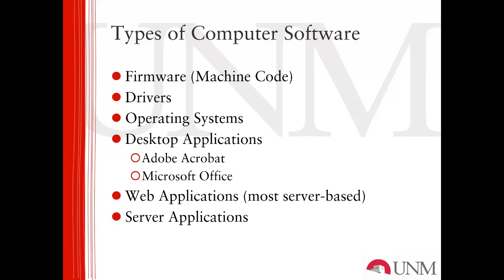On top of the operating system run desktop or server applications. Depending on what type of hardware you are working with depends on what kind of software you put on that hardware. For a typical desktop computer system, you're going to add desktop applications like Microsoft Office, Adobe Acrobat, and a variety of tools like Photoshop — tools intended to be sophisticated with good user interfaces that an individual computer user manipulates. On a server-class piece of hardware, one can run a web server and web application-based applications, or other types of server applications.